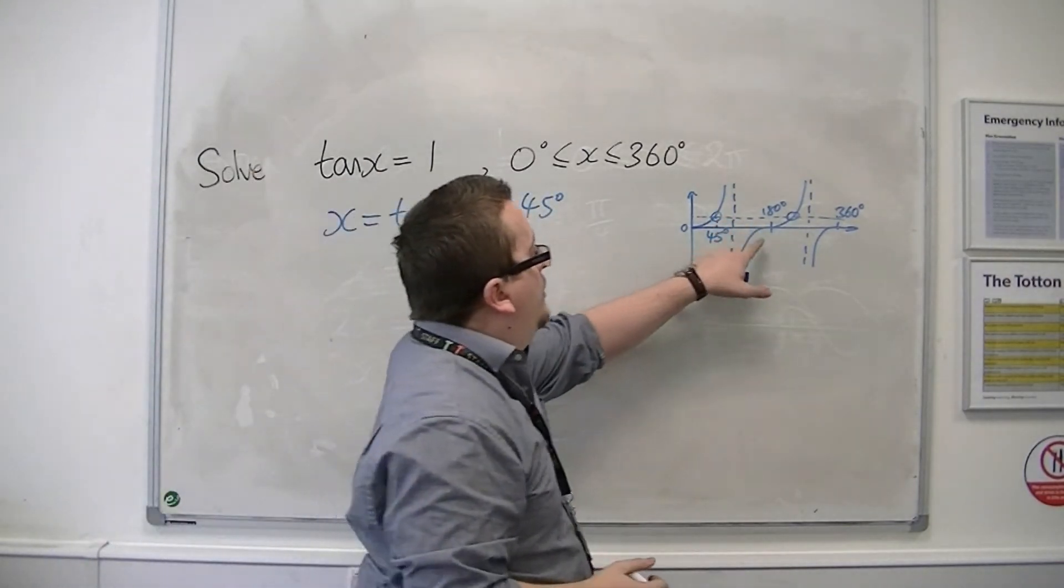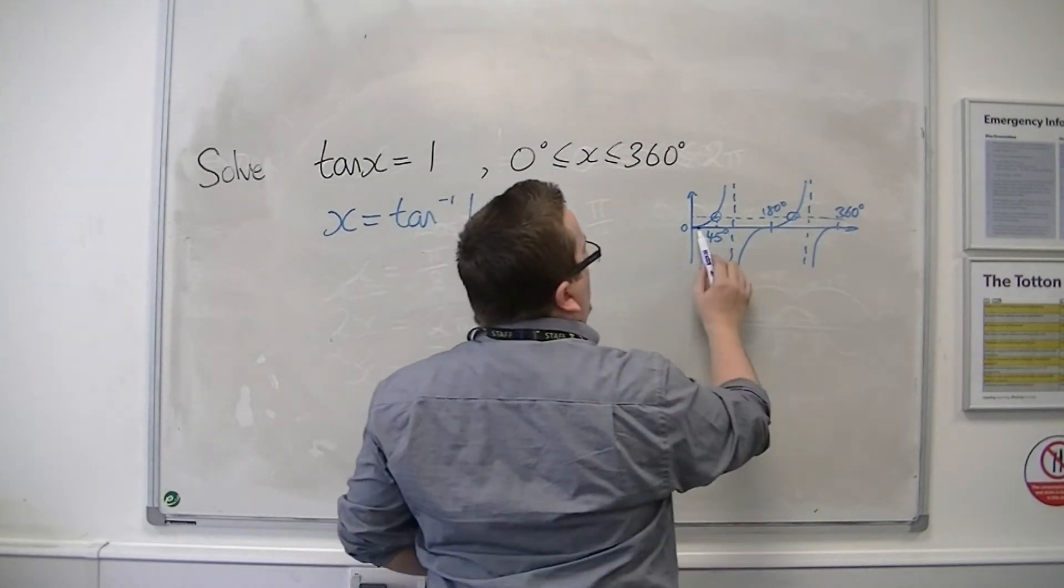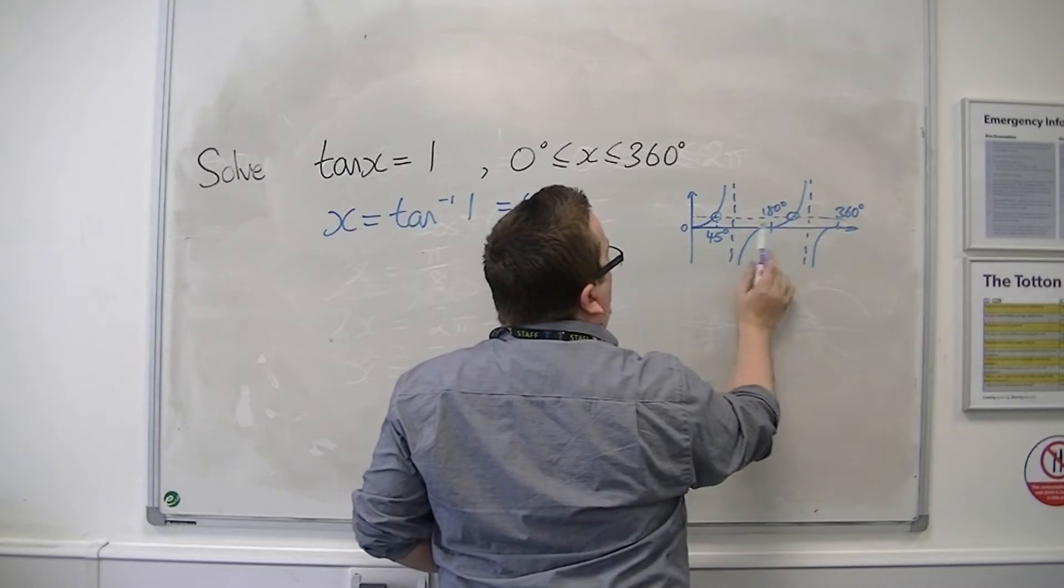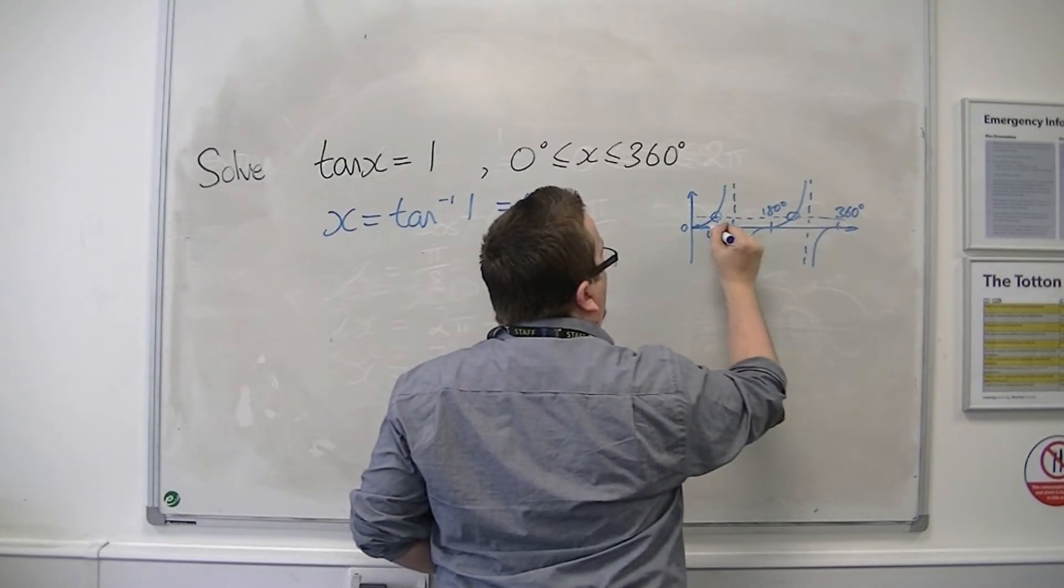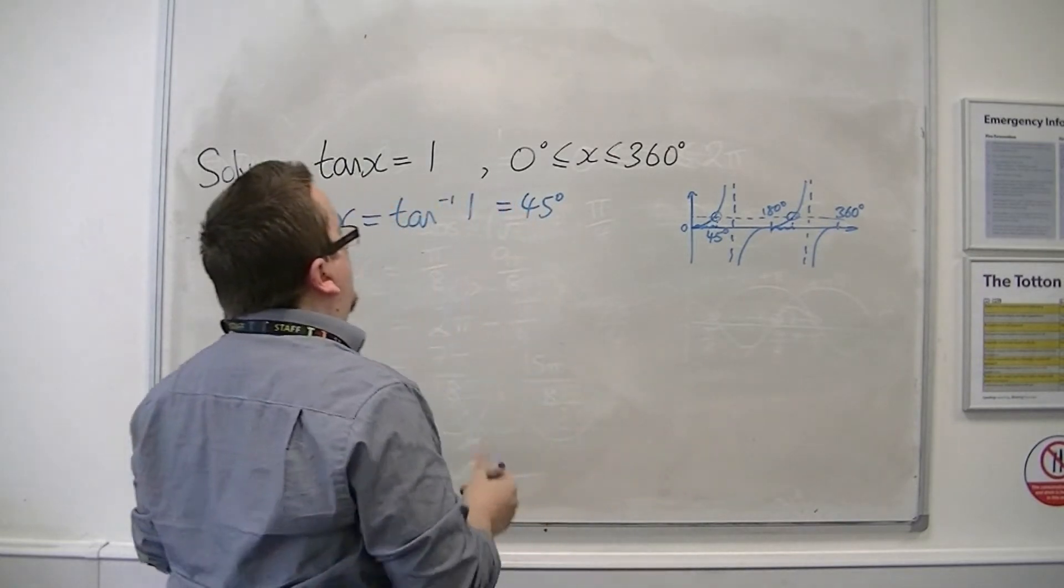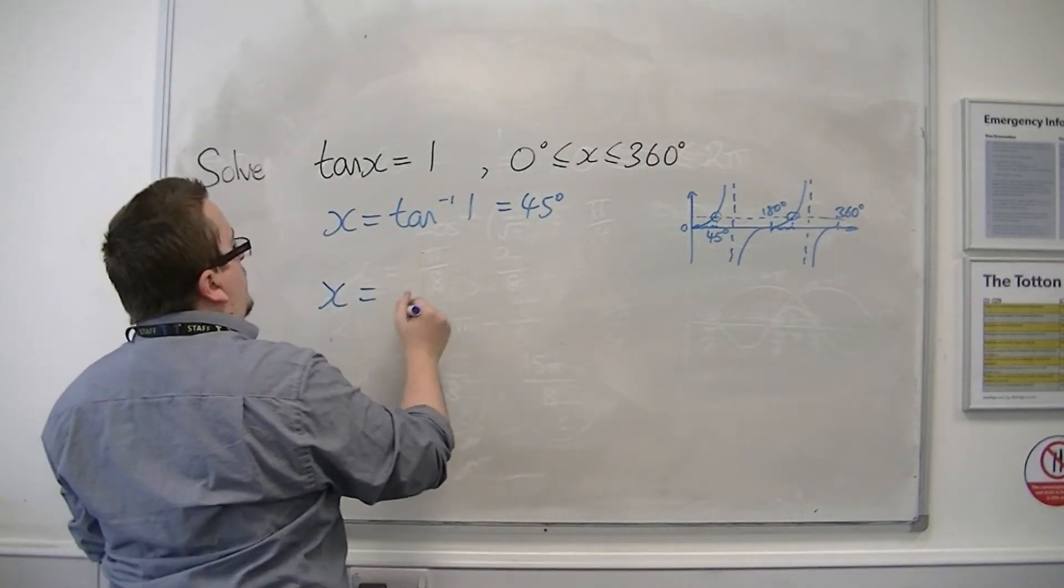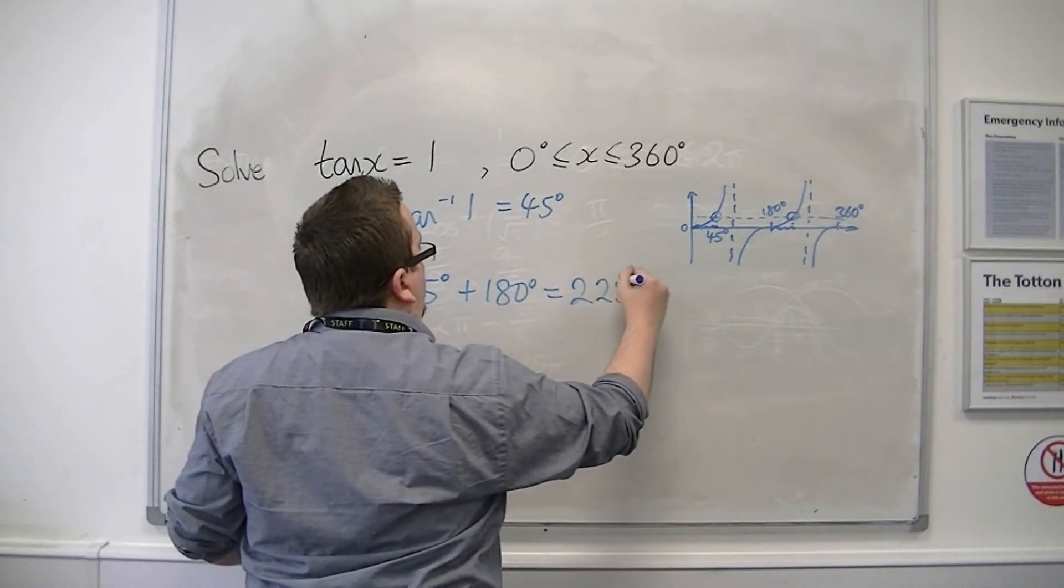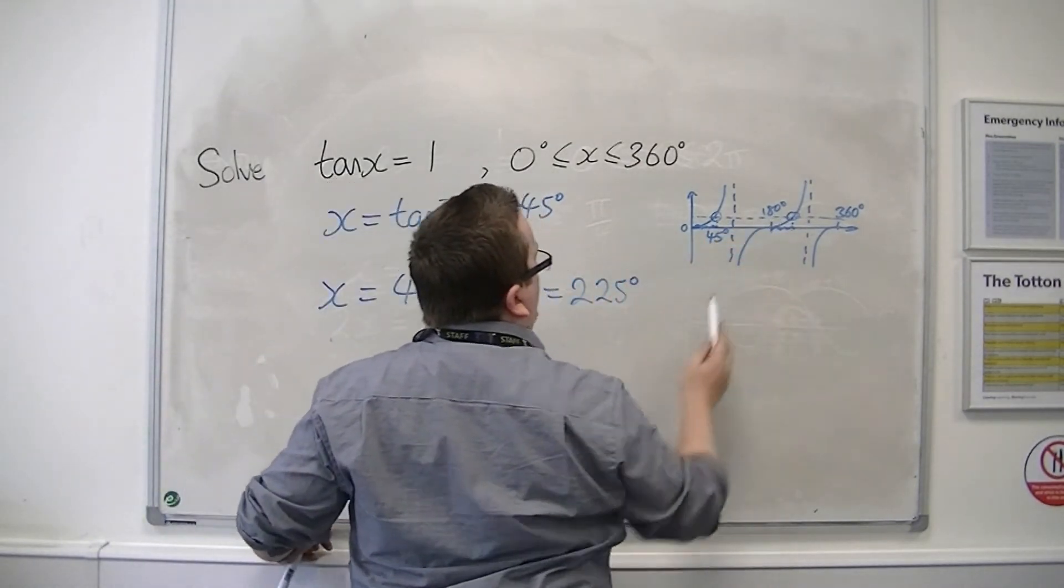Now, you can see here that the next curve along, this curve is the same as this part. And so we've got, if that gap is 45, then this gap must be 45. So I can find the other solution by just adding 180. And so I get 225, or 180 plus the 45.